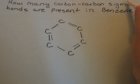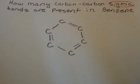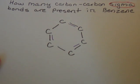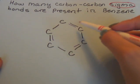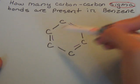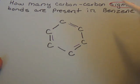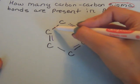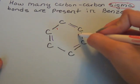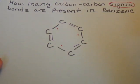So we're going to find them — I'm going to color code it with red just to make it easier. We can see that we have three double bonds, so we're not going to count those for now. We're just going to count the single ones. So we have one, two, three.